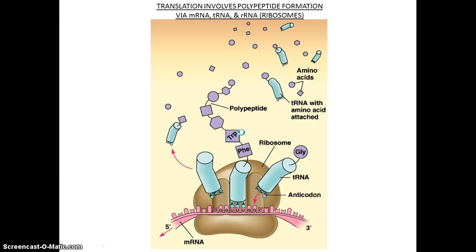Now let's talk about translation. Once you have your mRNA, the mRNA will leave the nucleus and go to the ribosome to make a protein. In translation, you have several players: the ribosome, tRNA which carries a complementary amino acid and an anticodon that is complementary to the triplet codon on the mRNA. The mRNA is read in the 5' to 3' direction.